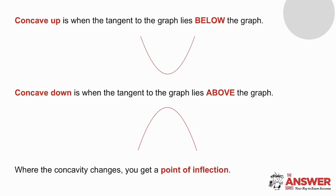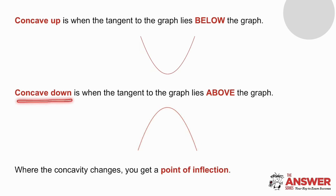If we talk about where the graph is concave down, it means we want to know where on the graph does the tangent line lie above the graph. So if a graph has that shape, we talk about it being concave down. And where the concavity changes — where it changes from being concave up to concave down, or vice versa — we get a point of inflection.